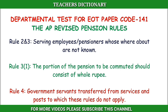Rule 2 and 3: Serving Employees or Pensioners whose whereabouts are not known. Rule 3(1): The portion of the pension to be commuted should consist of whole rupees. Rule 4: Government servants transferred from services and posts to which these rules do not apply.